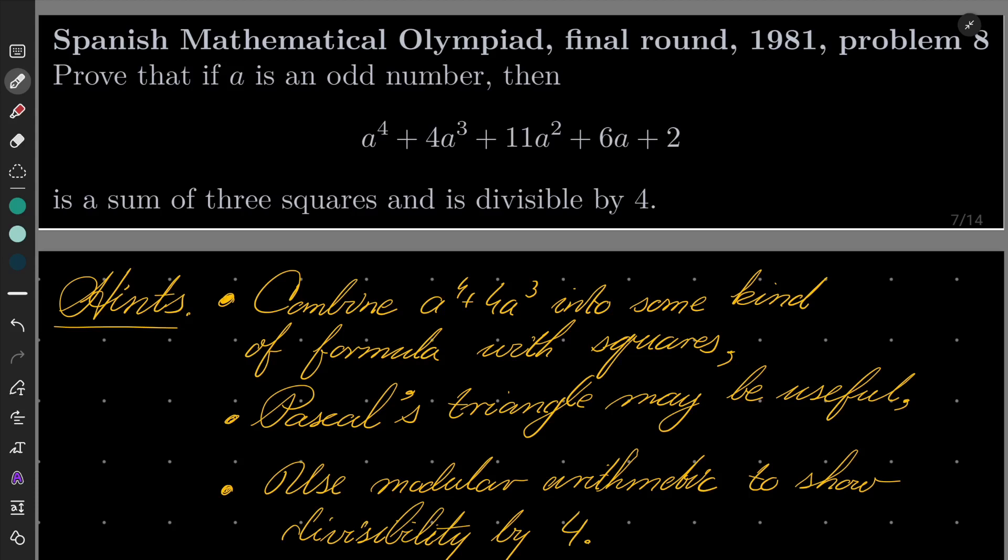We wish to prove that if a is an odd number, then a^4 + 4a^3 + 11a^2 + 6a + 2 is a sum of 3 squares and that this number is divisible by 4.